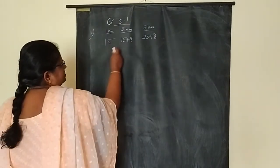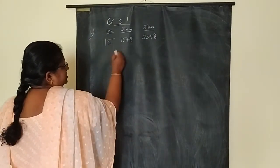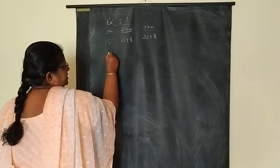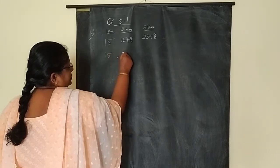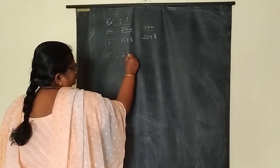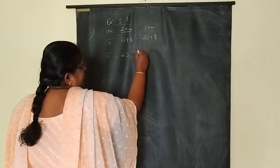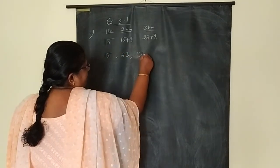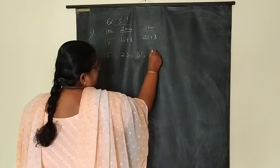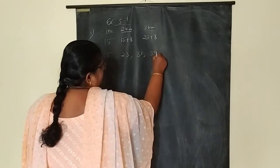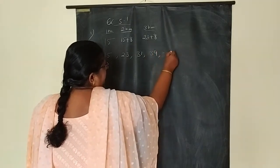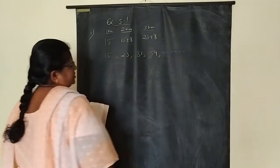So what are the terms we are getting? 15, 23, 31 — and next you are going to get 39, and so on.